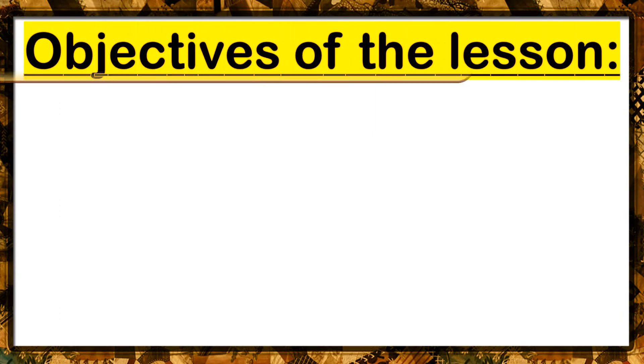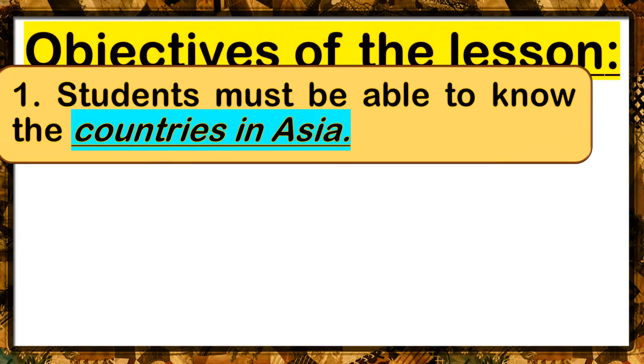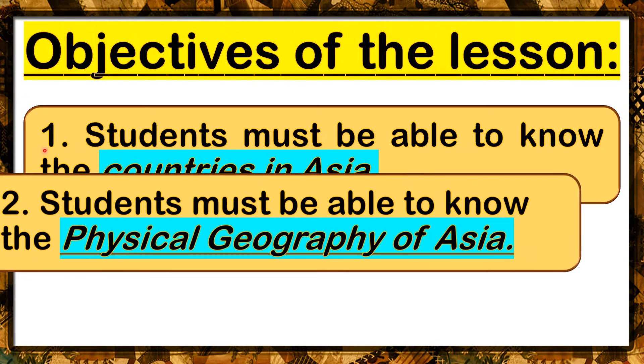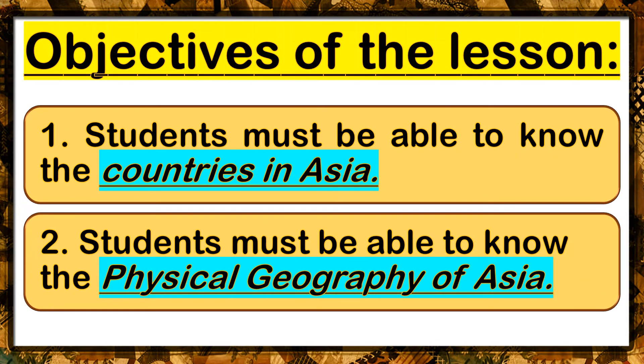So class, what are the objectives of our lesson for today? Number one is students must be able to know the countries in Asia. Number two, students must be able to know the physical geography of Asia. At the end of our discussion today, I expect that you already know some countries in Asia, that you can name some countries in Asia, and the physical geography of Asia — or how Asia looks like.